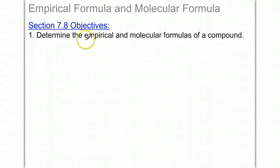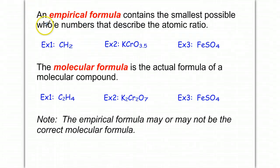Molecular formulas of a compound. So what is an empirical formula? It contains the smallest possible whole numbers that describe the atomic ratio. You're going to notice we have kind of a weird exception, and we'll describe that a little bit later.